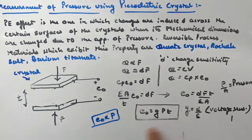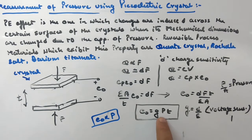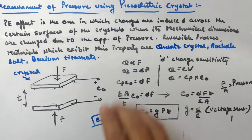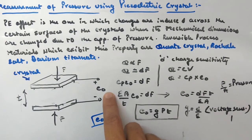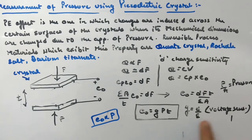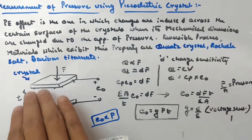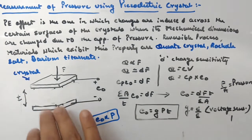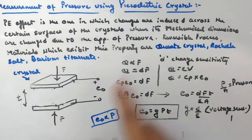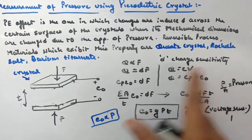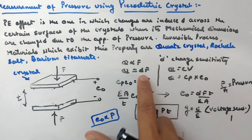E₀ depends upon g, p, and t. Since g and t are constants, E₀ is proportional to p — so if you change the pressure, the output voltage changes. Here g = d/ε is the voltage sensitivity, p = F/A is the pressure, and t is the thickness between the plates. d is the charge sensitivity, which removes the proportionality constant.